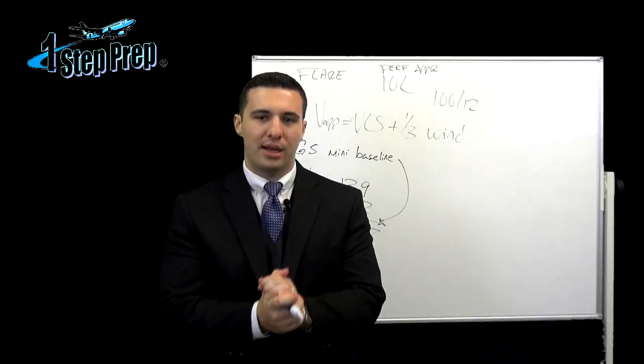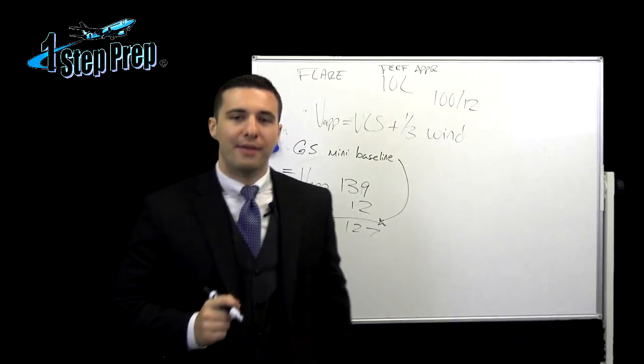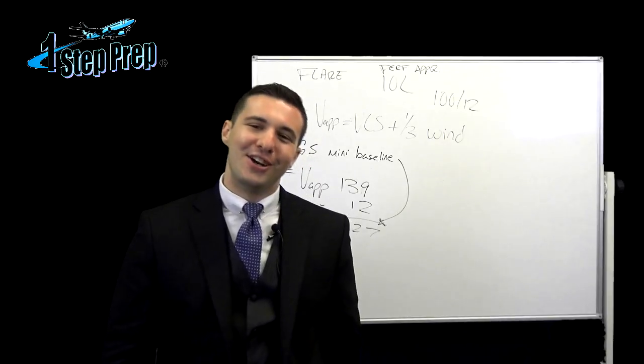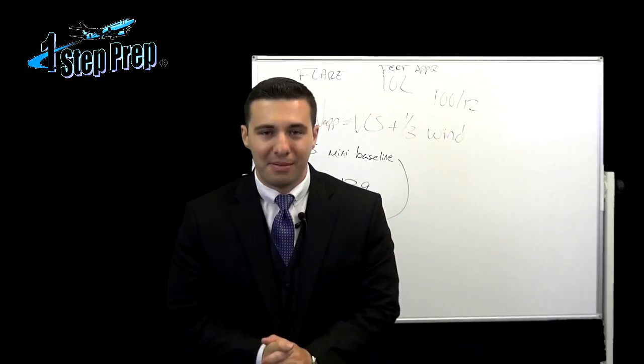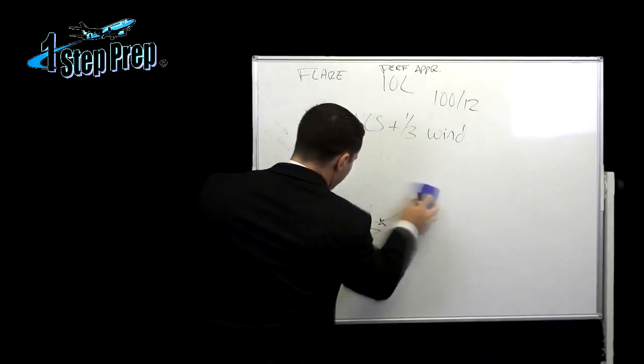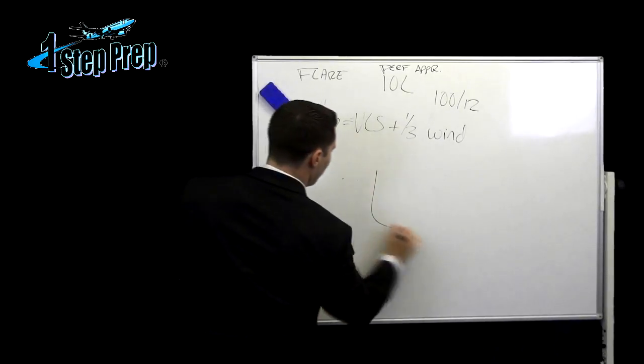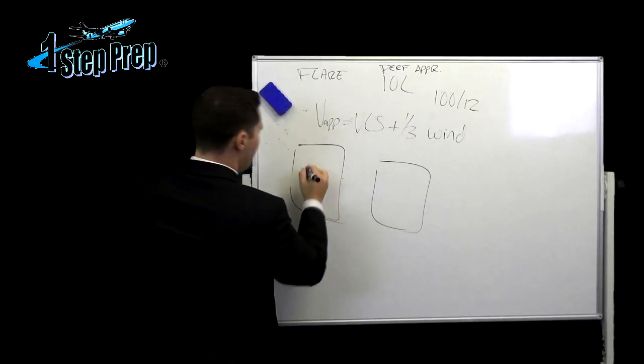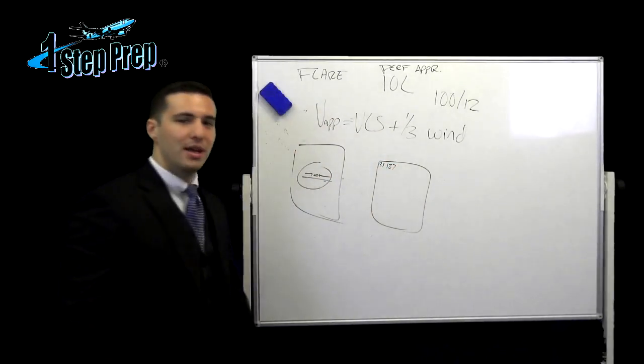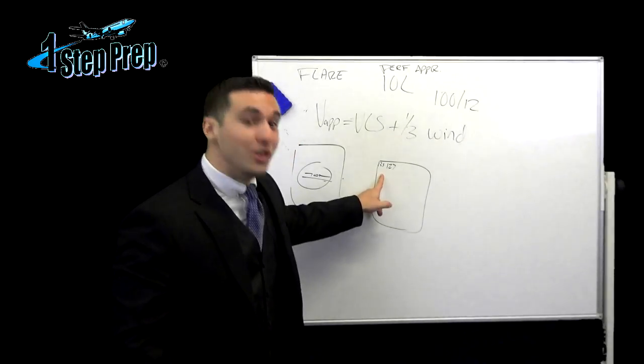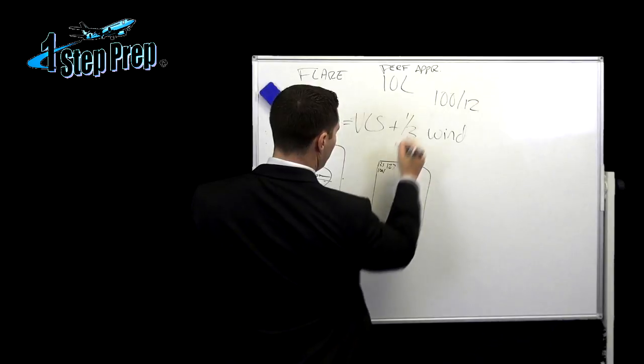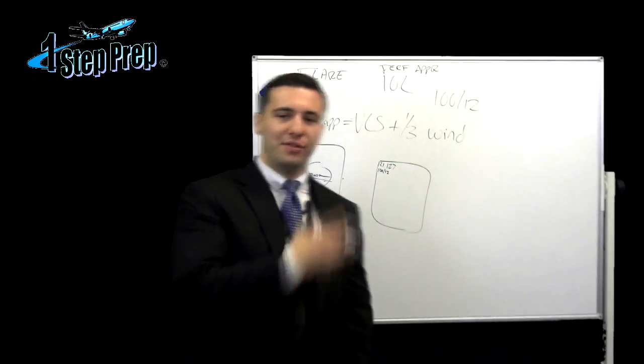So on your navigation display in the top left corner, you have an ADIRS ground speed indication that's provided from your air data inertial reference system. For more information on that, visit onestepprep.com oral prep segments. We talk all about that stuff there. Now look, 127 will be seen on the top left corner of the navigation display. So check this out. Here's my PFD on the left side, attitude indicator, and over here I got ground speed which should be 127. Now the other thing that you got over here is an ADIRS wind vector. It actually should say 100 at 12, and it'll vary obviously with altitude.